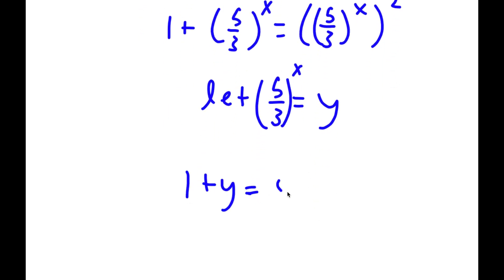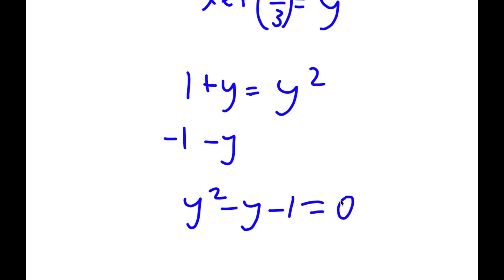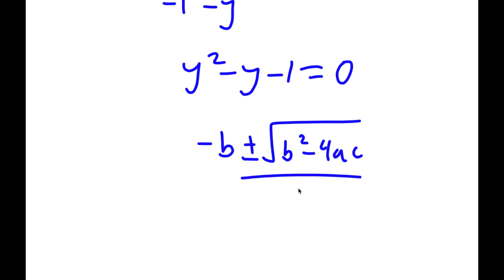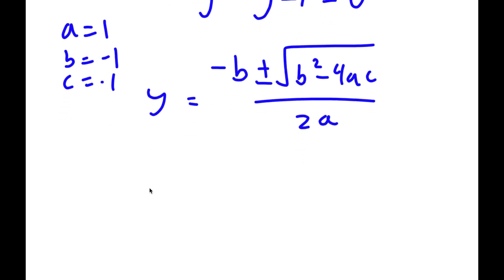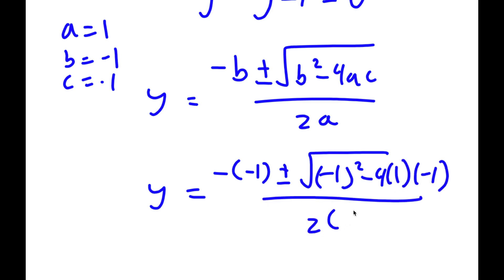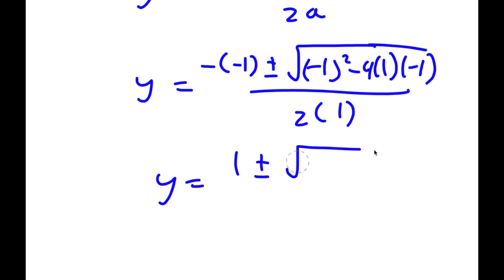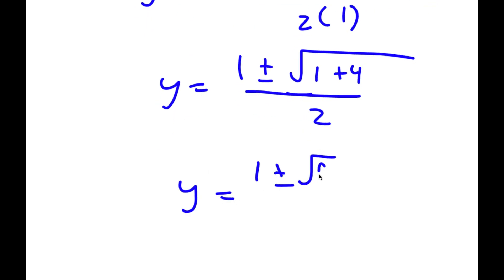So now I have 1 plus y equals y squared. Subtracting y and 1 from both sides gives y squared minus y minus 1 equals 0. Using the quadratic formula — negative b plus or minus the square root of b squared minus 4ac, all over 2a — with a equals 1, b equals negative 1, and c equals negative 1, I get y equals 1 plus or minus the square root of 1 plus 4 over 2, which equals 1 plus or minus the square root of 5 over 2.